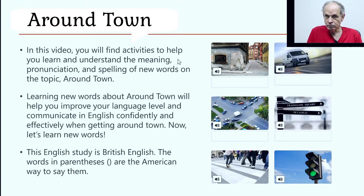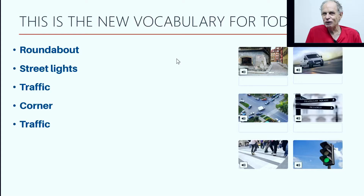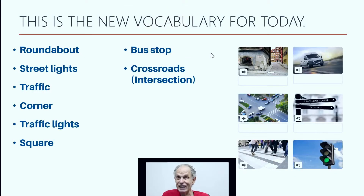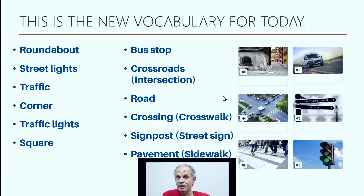Now let's learn new words. This English study is British English. The words in parentheses are the American way to say them. This is the new vocabulary for today: roundabout, street lights, traffic, corner, traffic lights, square, bus stop.